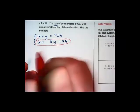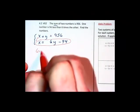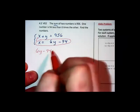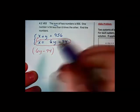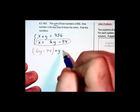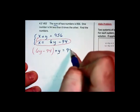So the bottom equation going into the top equation gives us 6y minus 94. That's what's getting substituted in. Plus the other y in that top equation is 956.